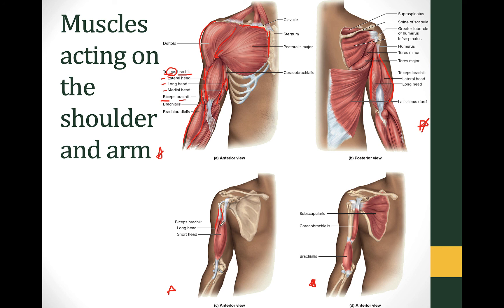This deeper image has some muscles cut away so you can see the two heads of the biceps clearly. The deeper anterior view shows the underside of the scapula, where you can see the subscapularis. The subscapular fossa on the underside of the scapula houses the subscapularis muscle, which originates on the scapula and inserts on the humerus. It medially rotates the arm, turning it in towards the median line of the body.